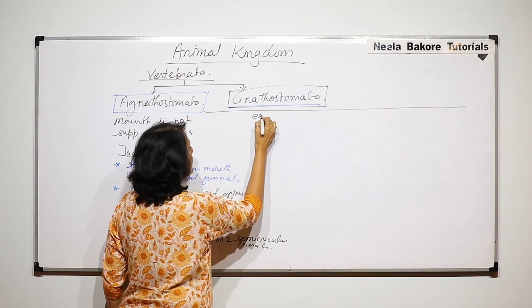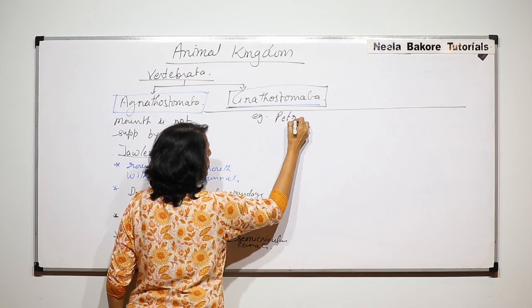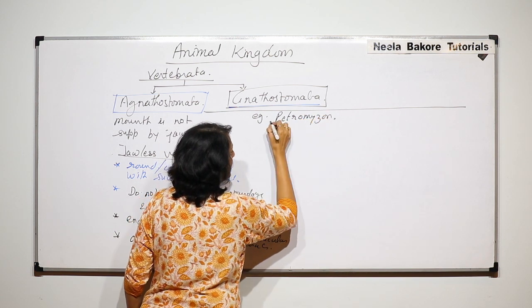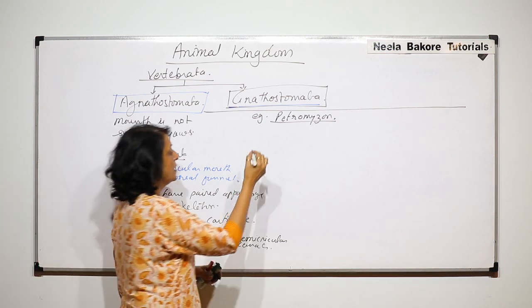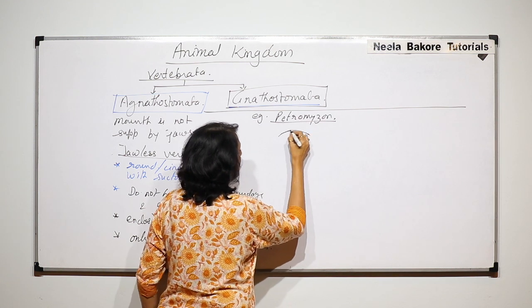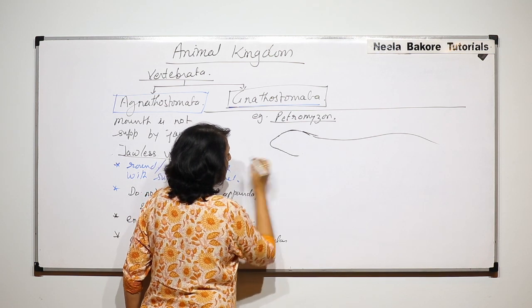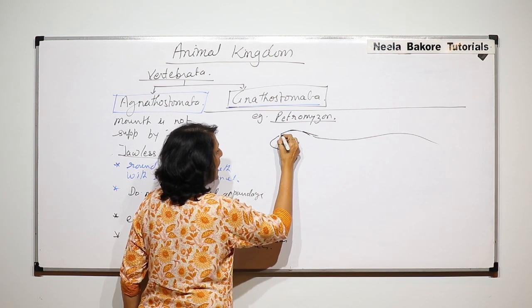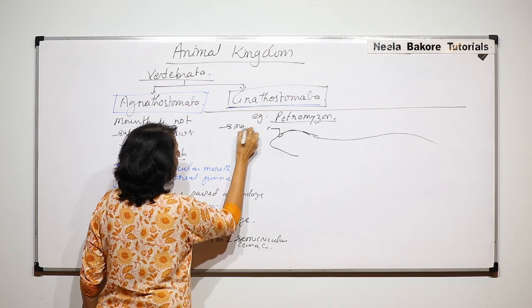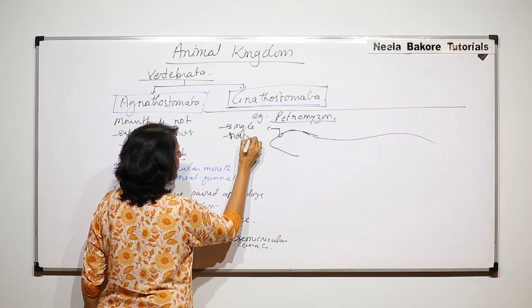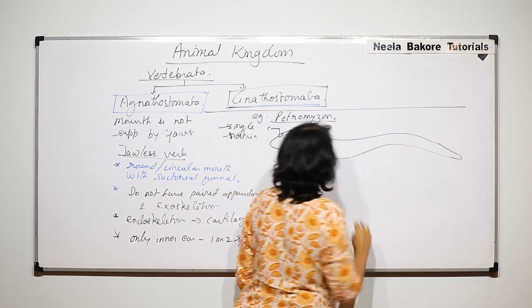The example that we are taking of Agnathostomata is Petromyzon. Let us talk about Petromyzon and some additional features. The body is fish-like, the mouth is anterior, and they have a single nostril. Eyes are present and this fish-like body tapers towards the posterior side.